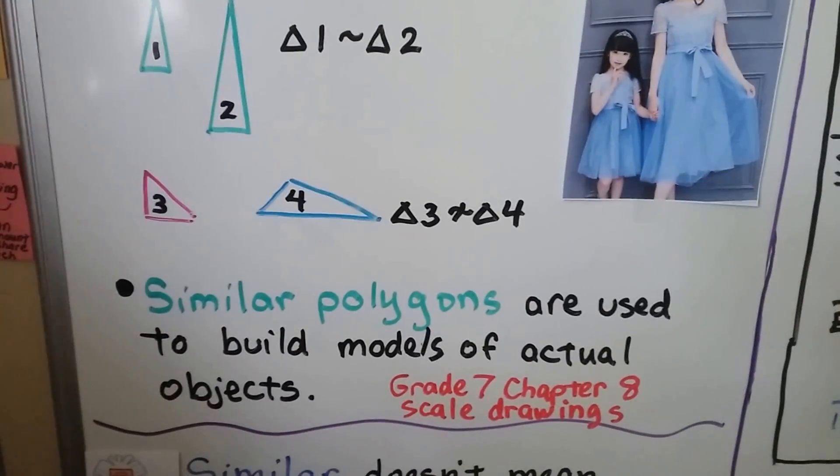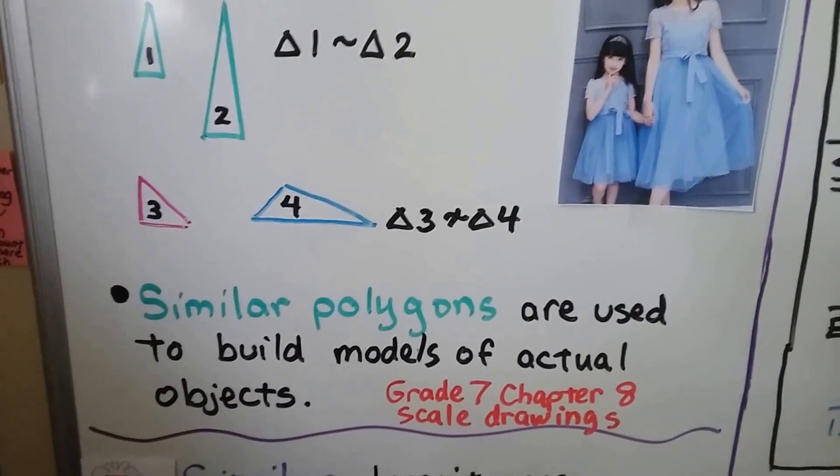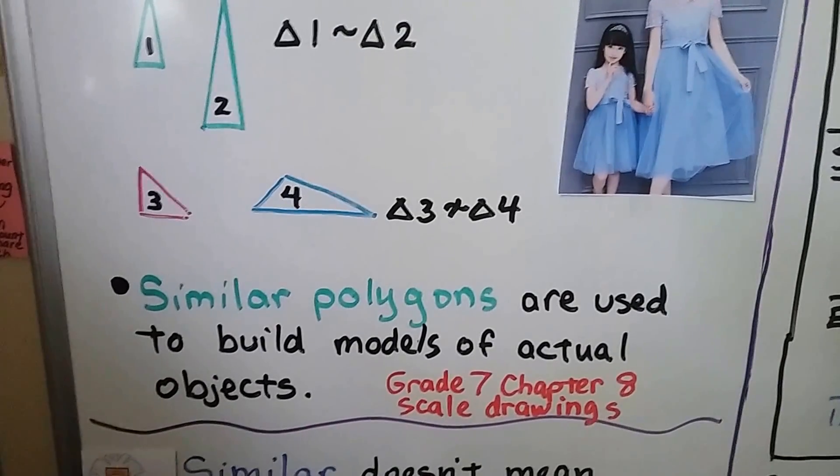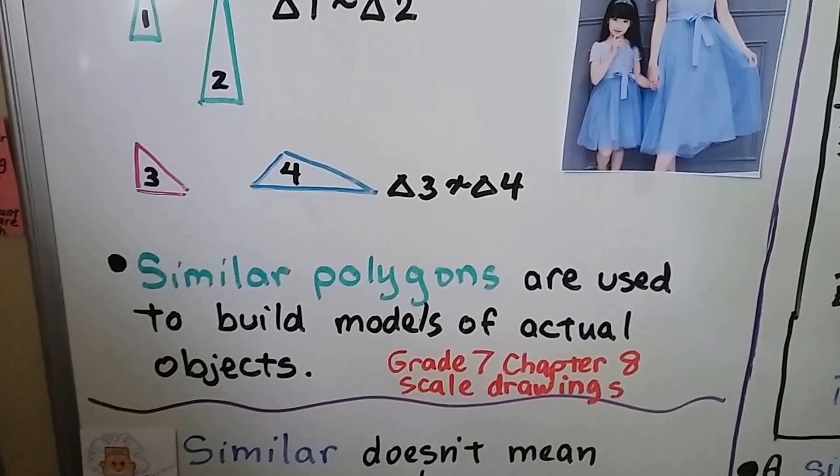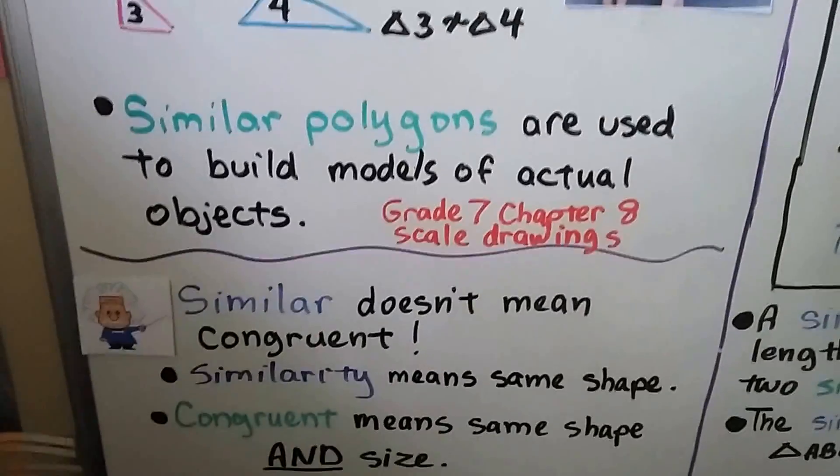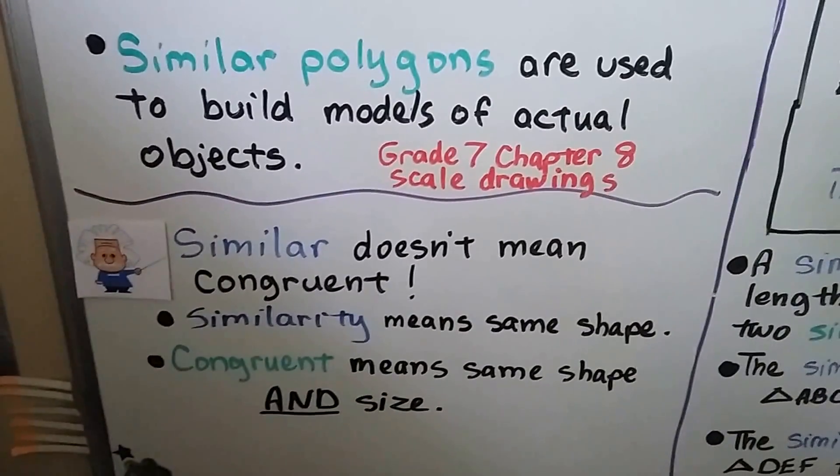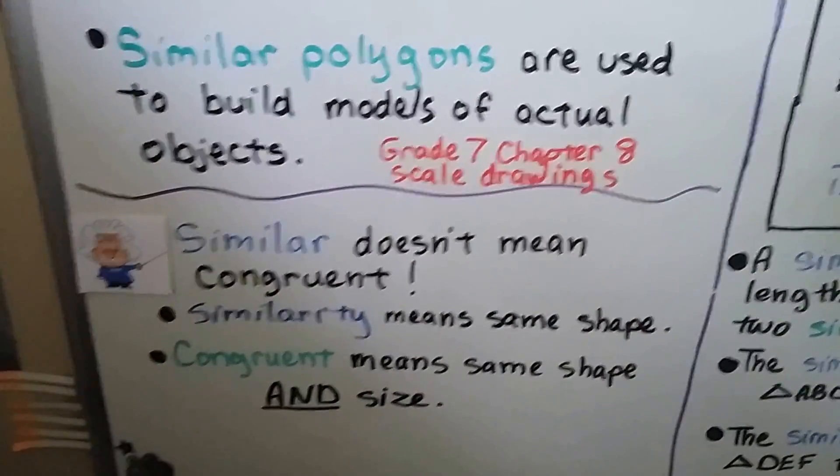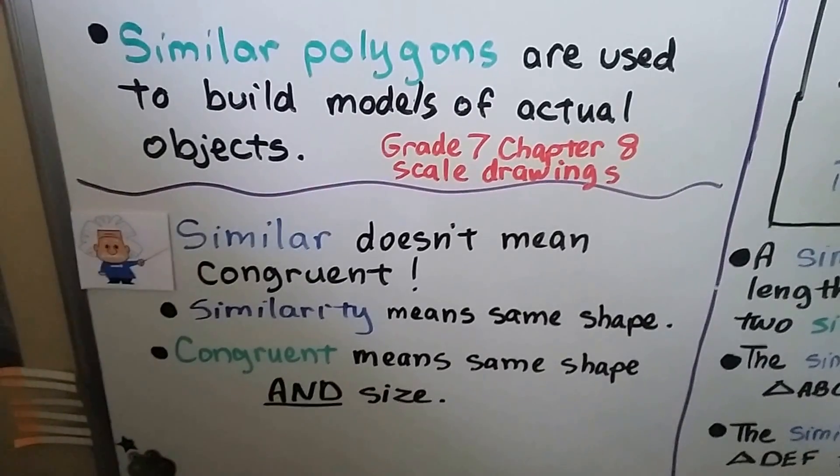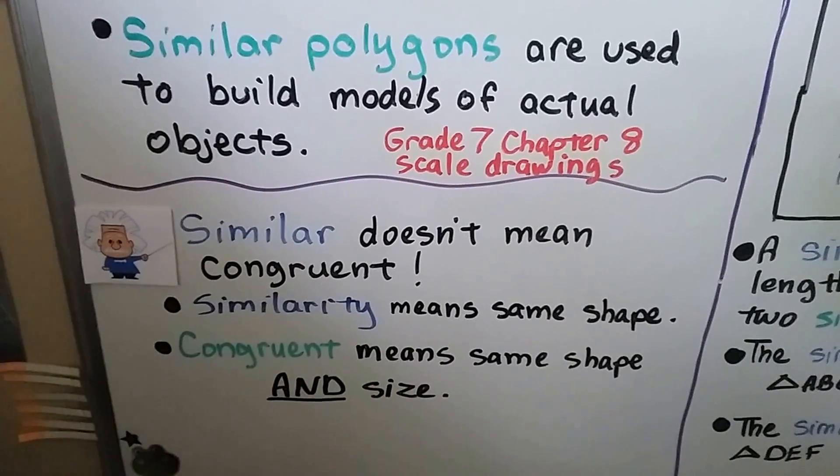Similar polygons are used to build models of actual objects. Back in Chapter 8 of Grade 7 Math, we did scale drawings and proportions and ratios. Hopefully you'll remember some of that. Similar doesn't mean congruent.